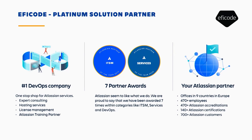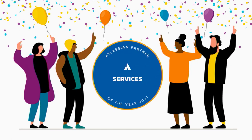As Eficode, we are providing Atlassian services for the full product portfolio — consultancy, migration services, and trainings. We have received awards from past years, we recently established our UK office, we have presence in nine different countries, and we are more than 400 people. Yesterday we received the services award from Atlassian.